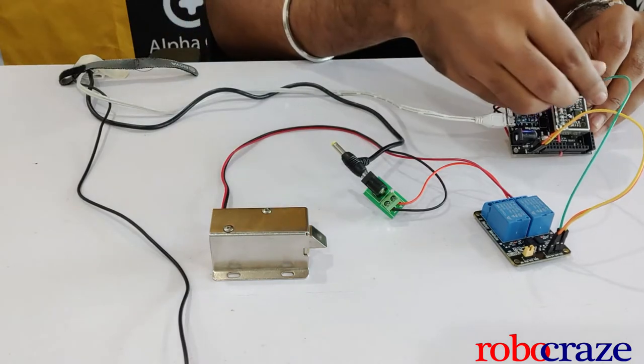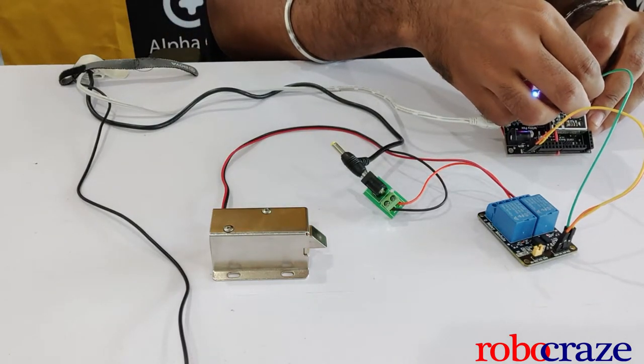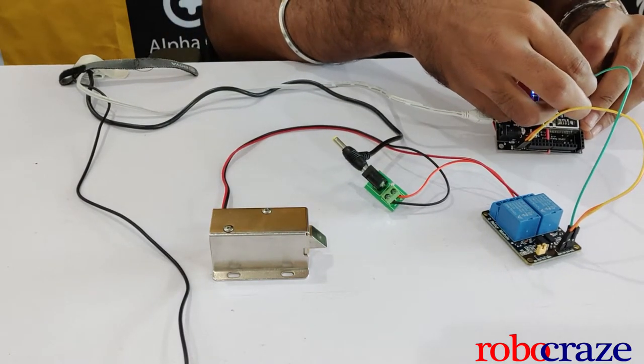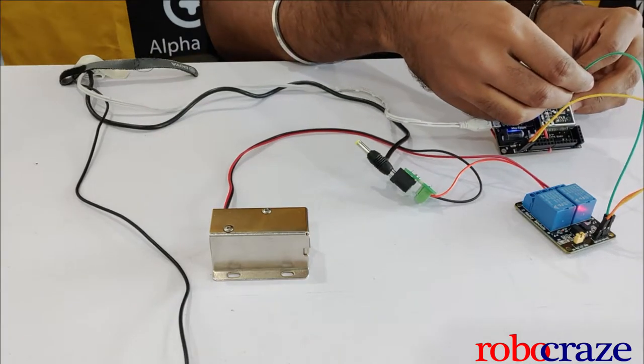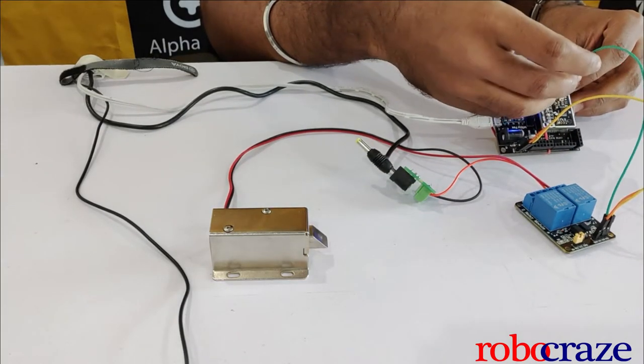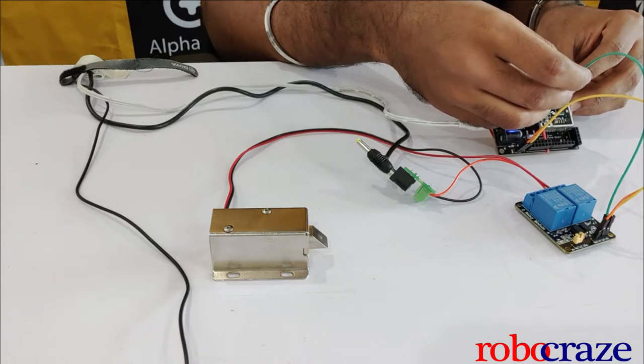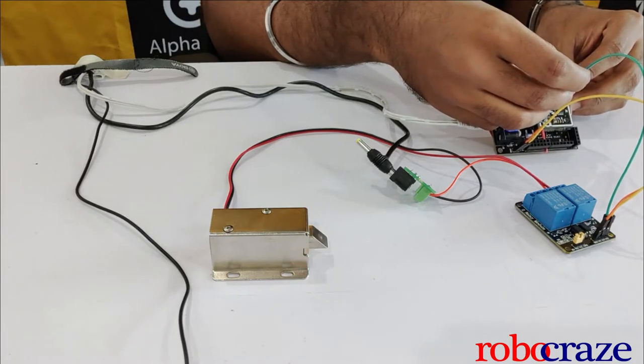The relay will turn on and off every time I give a low signal to the relay. As you can see every time I give a low signal to my relay, the solenoid lock goes in.